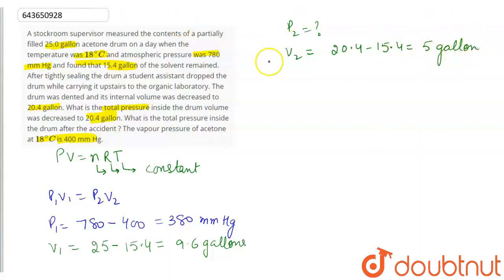Now we use our equation P1V1 equals P2V2. So P1 value is 380, V1 is 9.6 gallons, P2 we have to find out, V2 is 5. So we will solve this. Our P2 will be 729.6 mmHg.